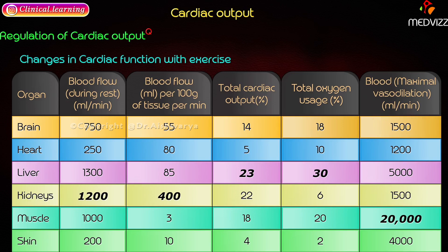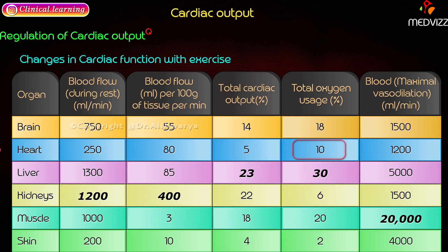Blood flow to the heart during rest is approximately 250 ml per minute, which is 80 ml per 100 grams of tissue per minute. Total cardiac output to the heart is 5 percent, and total oxygen usage is 10 percent. With maximum vasodilation, the heart receives 1200 ml per minute.